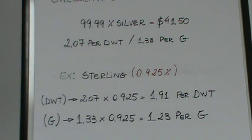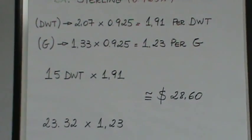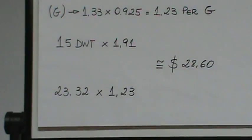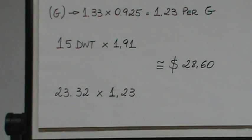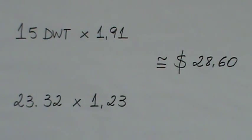And for grams, it's $1.33 for the 100% pure silver, times again 0.925. And you come out with $1.23 per gram. Now we're going to do 15 pennyweights times $1.91, and you come up with $28.60. Now if you remember from the example before, the 50 pennyweights of gold was approximately $802.75. So there's a big difference between the value of your gold items and your silver items.